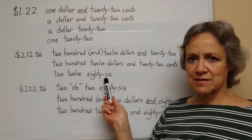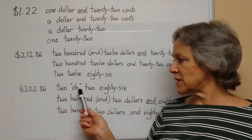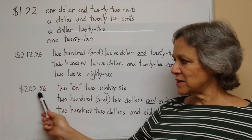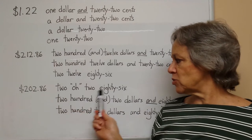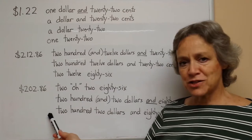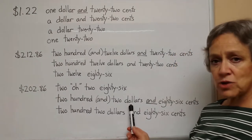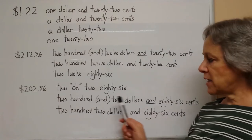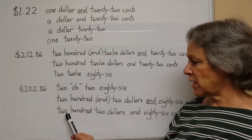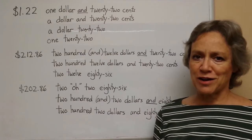We could also say 'two twelve eighty-six.' For a number with a zero in the tens place, we very often say 'oh' for that zero — it's not an 'oh,' it's a zero, but we very often do say 'oh.' So this could be read as 'two oh two eighty-six,' which is a very common way of saying it. Or we could say 'two hundred and two dollars and eighty-six cents' — and as with the example above, this first 'and' is not really correct, but many people say it. Without that 'and,' we would have 'two hundred two dollars and eighty-six cents,' and this 'and' in this position is correct — it's for the decimal point. So those are just different ways of saying money amounts.